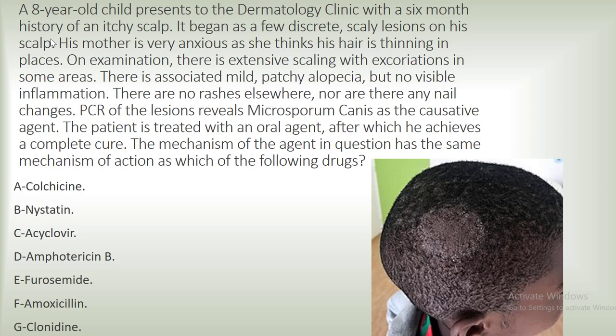If you got the answer right, pat yourself on the back. If you didn't, it's okay — it's a difficult question. Let's take a look at the other answer choices. We have Nystatin. Nystatin and amphotericin B have the same mechanism of action: they work by making pores within the cell membrane of fungal cells, and stuff leaks out of the cells and the cells die. So that's not the correct answer.